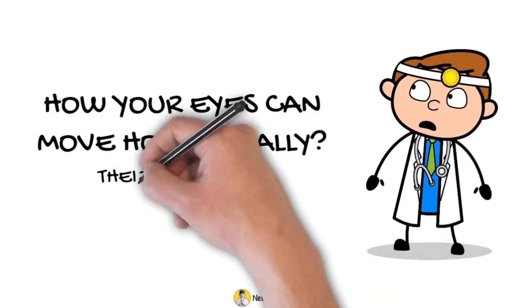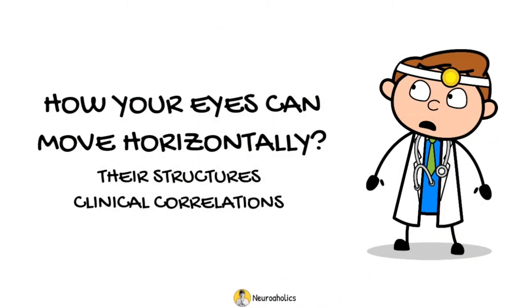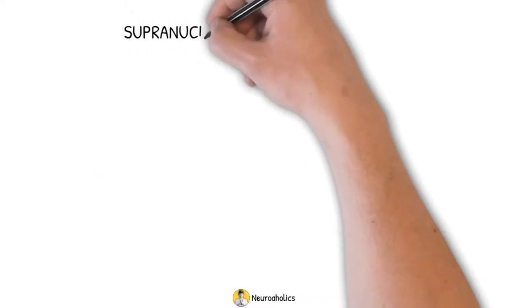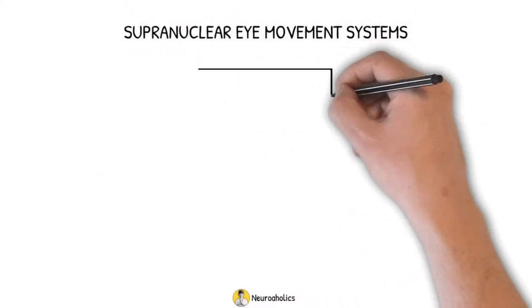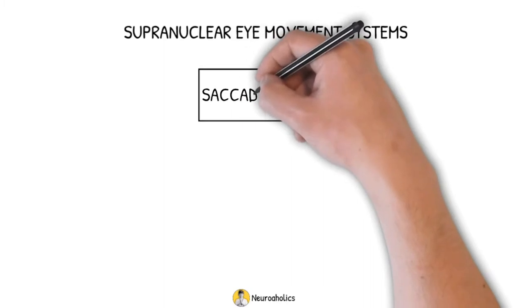How your eyes can move horizontally, their structures and clinical correlations. There are five supranuclear eye movement systems. This video will discuss the saccadic system.